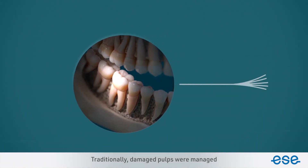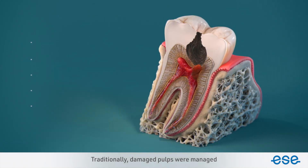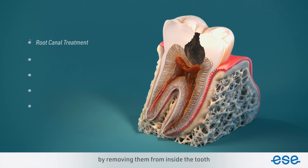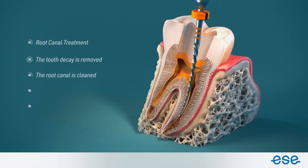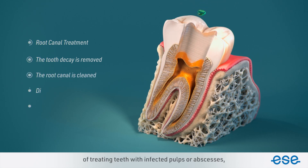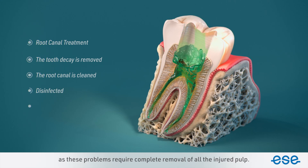Traditionally, damaged pulps were managed by removing them from inside the tooth and then carrying out root canal treatment. Root canal treatment remains the best way of treating teeth with infected pulps or abscesses, as these problems require complete removal of all the injured pulp.